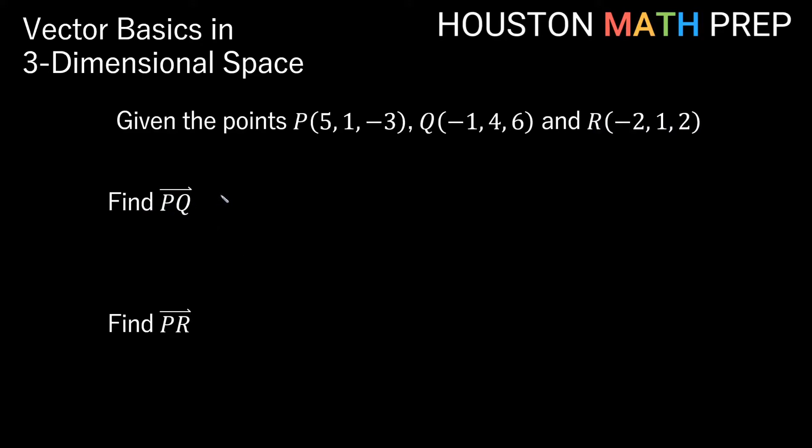So in other words, we are taking simply our terminal point Q minus our initial point P for each coordinate. So what we'll have here is we'll have negative 1 minus our P first coordinate, which was 5. Now remember we're using angled brackets because these are vectors. So our second coordinate will have Q minus P again, which will be 4 minus 1. And then for our z coordinate, we'll have the terminal z coordinate minus the initial z coordinate, which is negative 3.